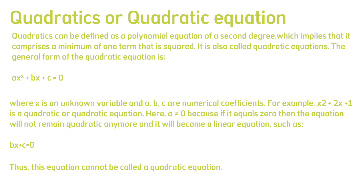Quadratics can be defined as a polynomial equation of a second degree, which implies that it comprises a minimum of one term that is squared. It is also called a quadratic equation. The general form of the quadratic equation is ax² + bx + c = 0, where x is an unknown variable and a, b, c are numerical coefficients.